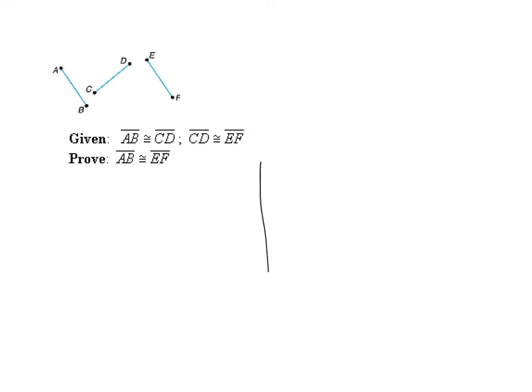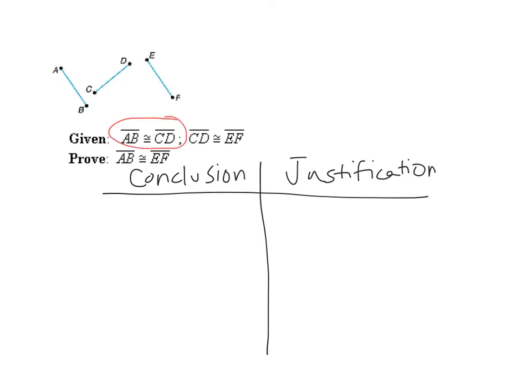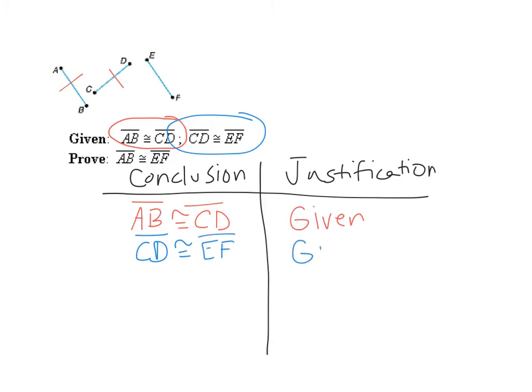We have a proof, so we're always going to write two columns. I write my conclusion, my justifications. First thing I do is I write my given. So I'm going to write segment AB is congruent to segment CD by given. Now I'm going to go over and mark it. AB is congruent to CD. My second given, the next line, CD is congruent to EF. That's given. I'm going to mark this one with a squiggly. CD is equal to EF. So I have to conclude that AB is congruent to EF. I'm going to write that on my last line. I want my final line to be what I have to prove.